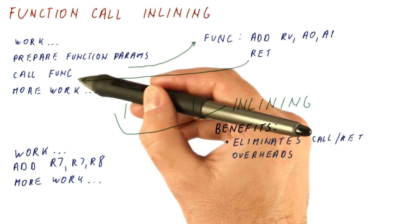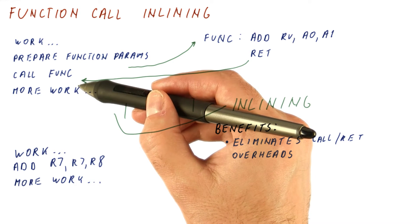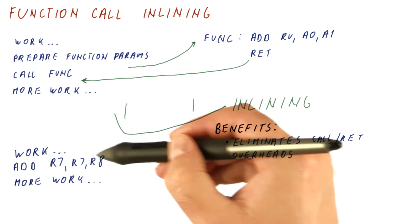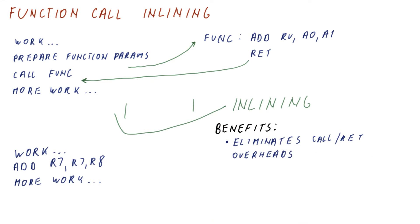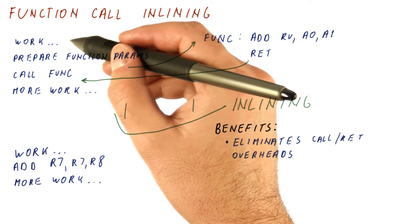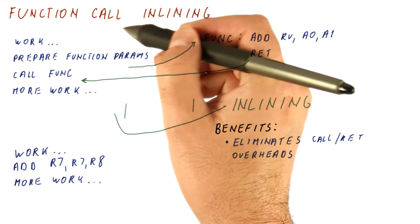And then possibly also the work after we return to get the return value into the register where we need it. All of that can be done by simply inlining the function and then just using the registers we want. And just like loop unrolling which helped scheduling do better, so does function call inlining.